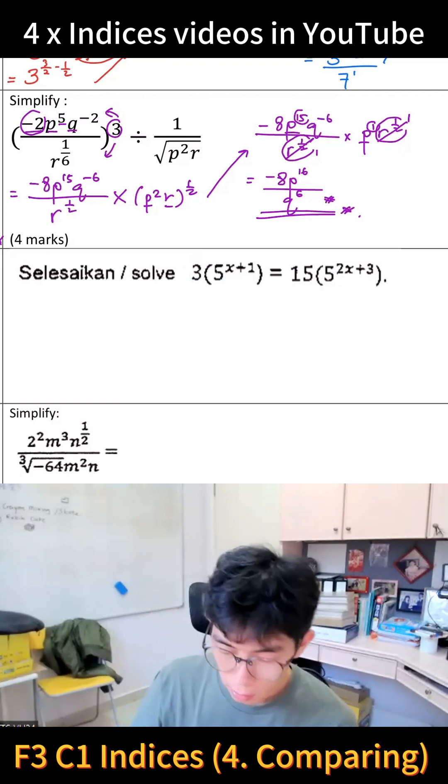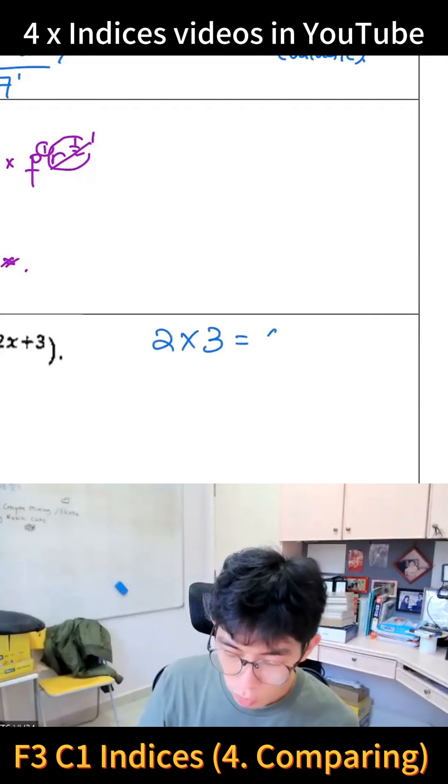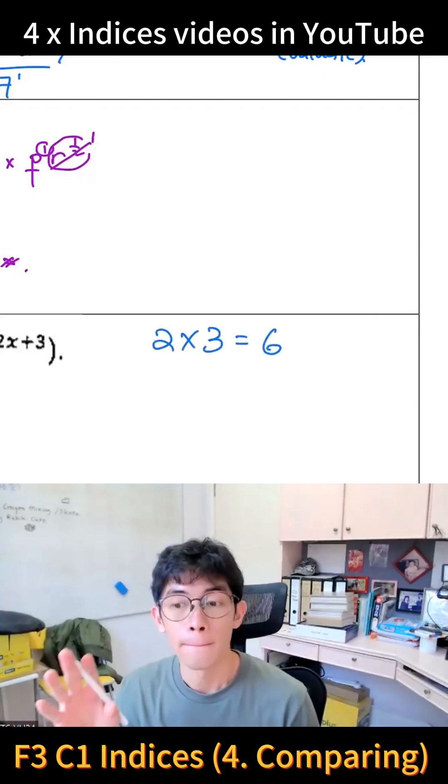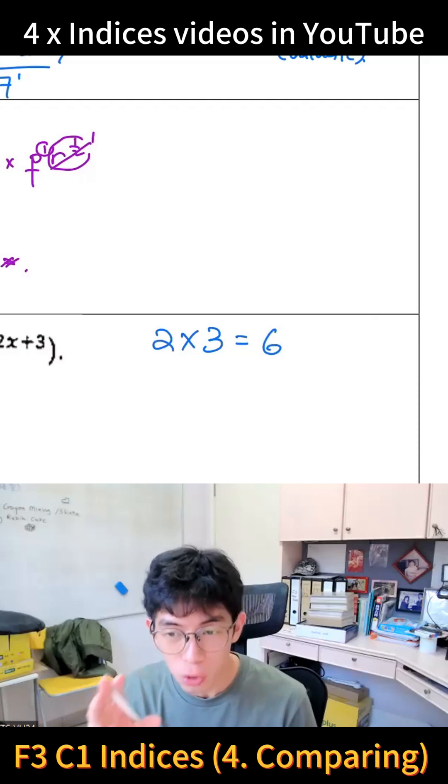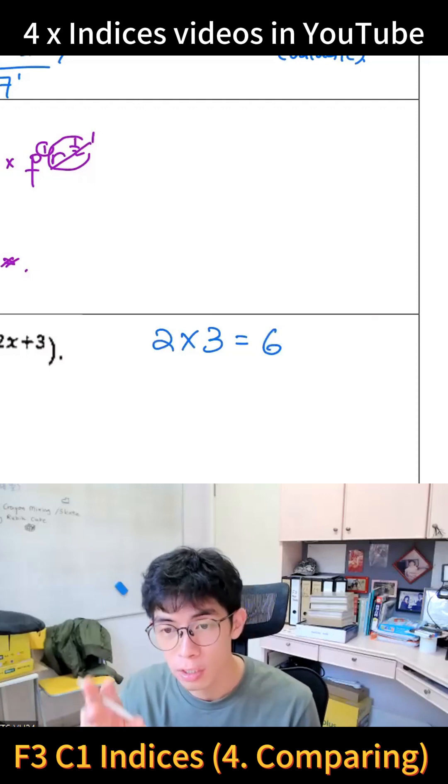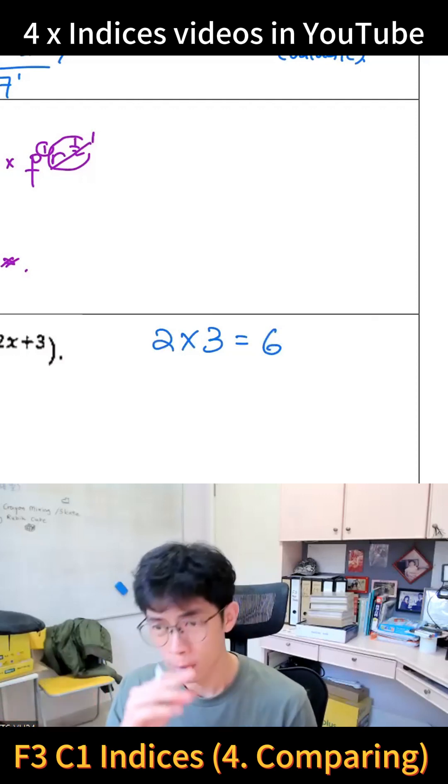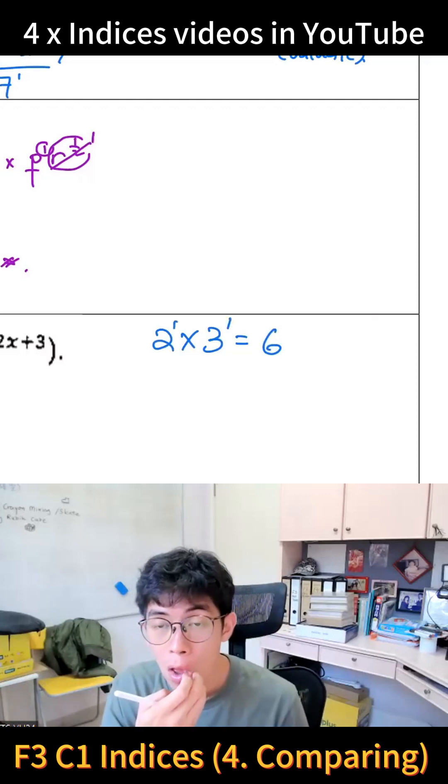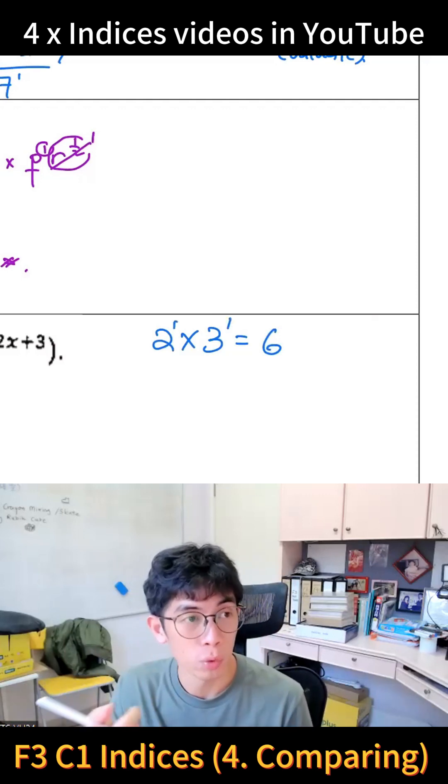I said something similar - I said that 2 times 3 equals 6, everybody knows that. But why can you times the 2 and 3 together and it becomes 6? The reason, based on indices, is because they have the same power. That's the reason why you can multiply them together.